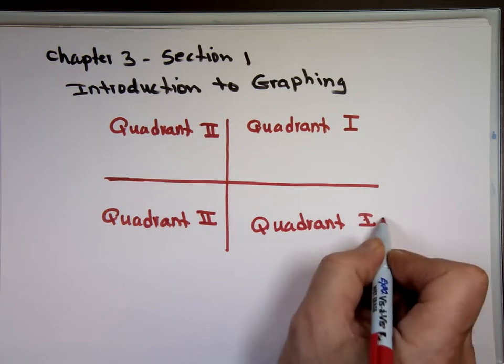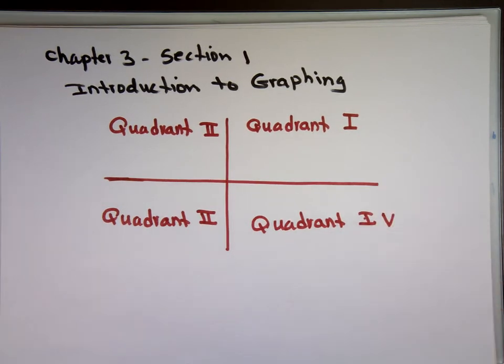Quadrant 4. And these are what we call Cartesian coordinates. Quadrant 1, quadrant 2, quadrant 3, quadrant 4.